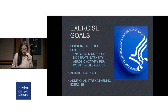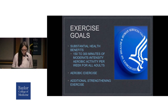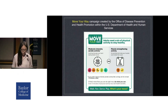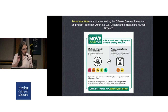Substantial health benefits arise when we reach 150 to 300 minutes of moderate-intensity aerobic exercise per week. In fact, the United States Department of Health and Human Services recommends exactly that for all adults. The Move Your Way campaign from the Office of Disease Prevention and Health Promotion outlines these goals: 150 minutes a week of moderate-intensity aerobic exercise to stay healthy, and at least two days per week should include some form of muscle-strengthening activity.